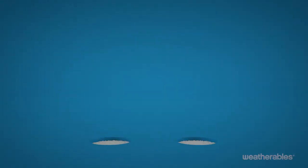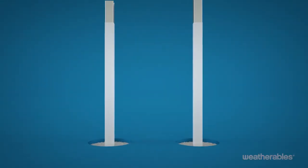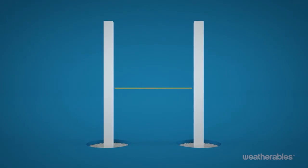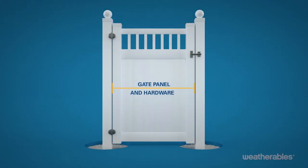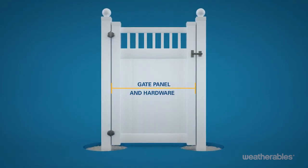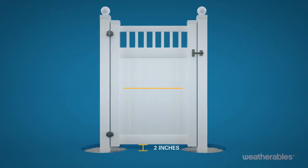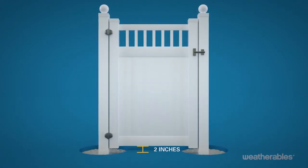First, set your gate posts with the aluminum inserts, being sure to allow enough space to accommodate both the gate panel and the gate hardware. You'll also want to allow a clearing of at least 2 inches between the bottom of the panel and the ground.